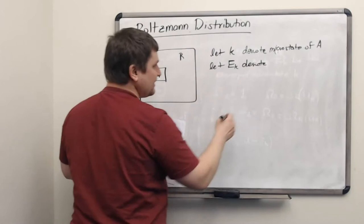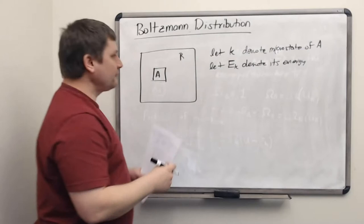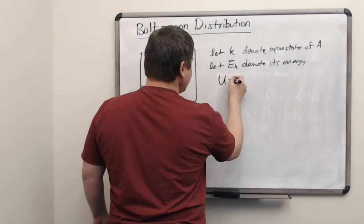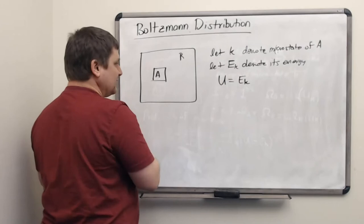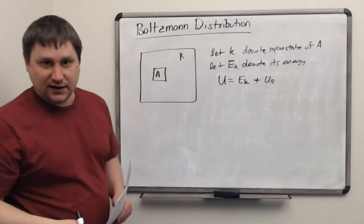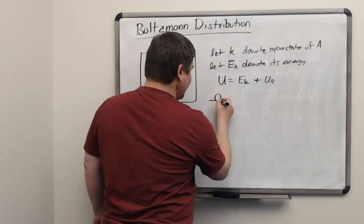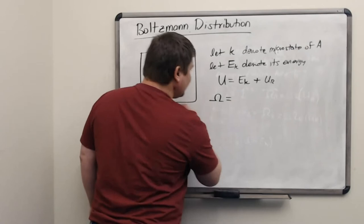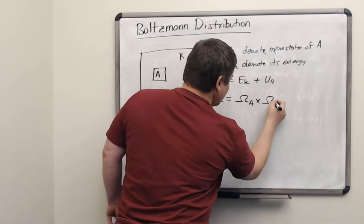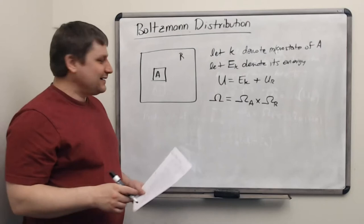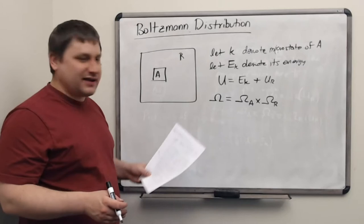When system A is in microstate K, we let E_K denote its energy. The reservoir and system A share energy, so the total energy U equals E_K plus whatever energy remains in the reservoir. The multiplicity of the overall system equals the multiplicity of the reservoir times the multiplicity of system A, but since K exactly specifies the microstate of A, the multiplicity of system A is just one.